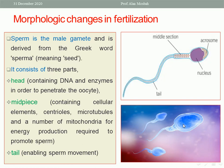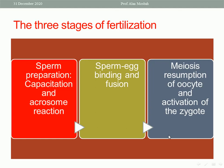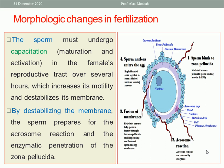The three stages of fertilization include: sperm preparation — capacitation and the acrosome reaction; sperm-egg binding and diffusion; and lastly meiosis completion of the oocyte and activation of the zygote. The sperm must undergo capacitation — maturation and activation in the female reproductive tract over several hours — which increases its motility and destabilizes its membrane, preparing it for the acrosome reaction and enzymatic penetration of the zona pellucida.